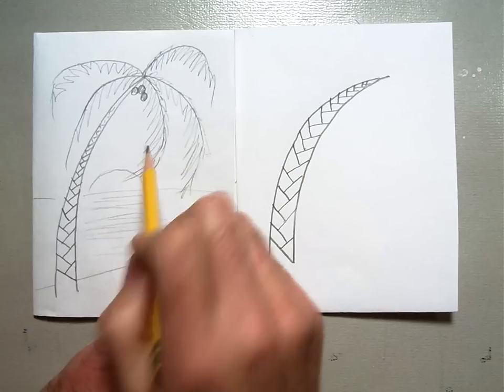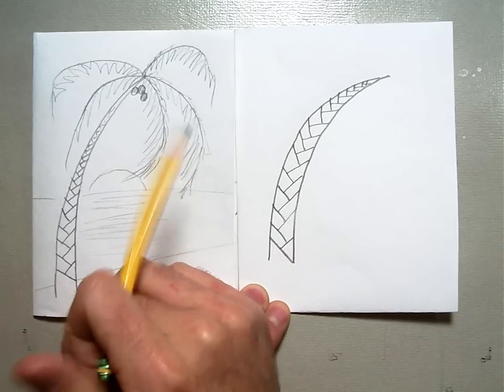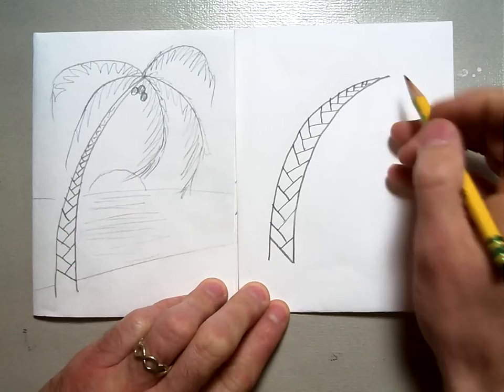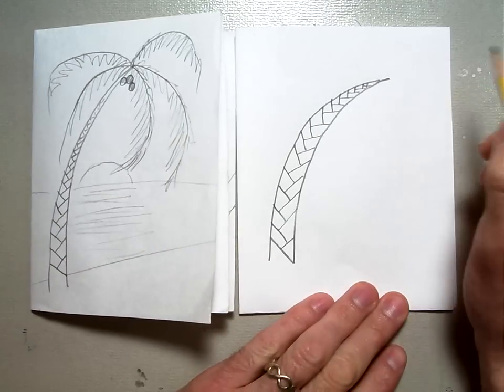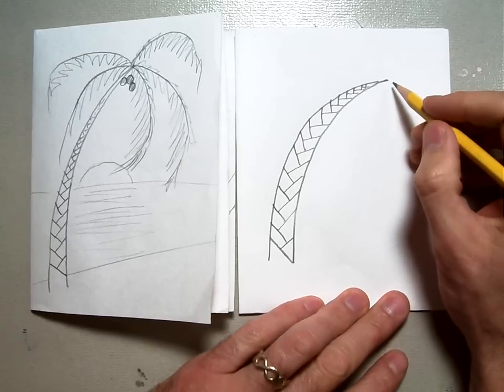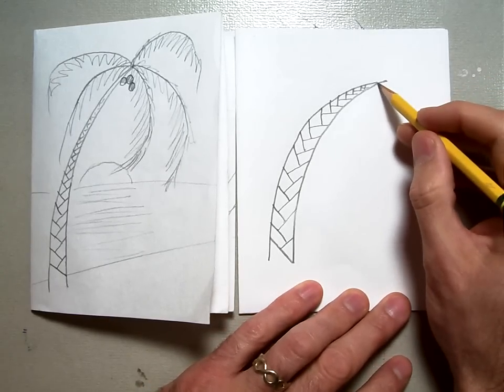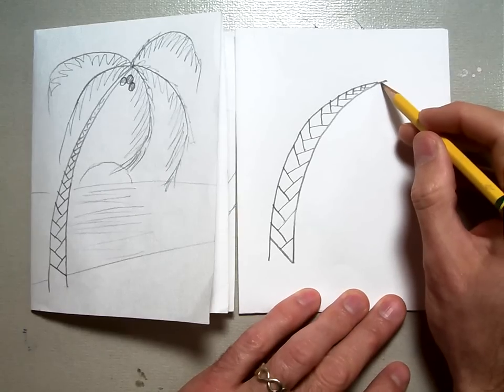Then notice my palm tree here. Now, the palm tree we looked at in class had many more branches than this, but five is a good number, an odd number. Artists like odd numbers because it just fills the paper nicely. So I'm going to make five branches coming off from this one point here.